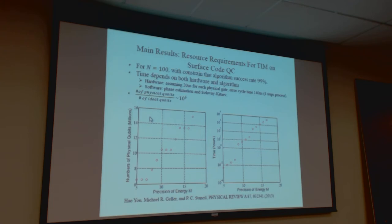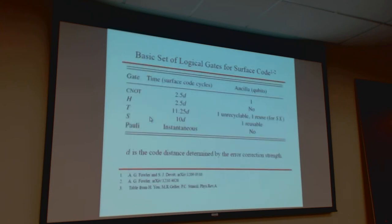For example, if we want to reach 15 bits of precision for the eigenstate energy, we basically need around 1,000 hours. This is the basic structure of the logical case for the surface code patch shown here: the time to implement certain logical gates in the surface code. If we look at the signal gate, it's like 2.5g.